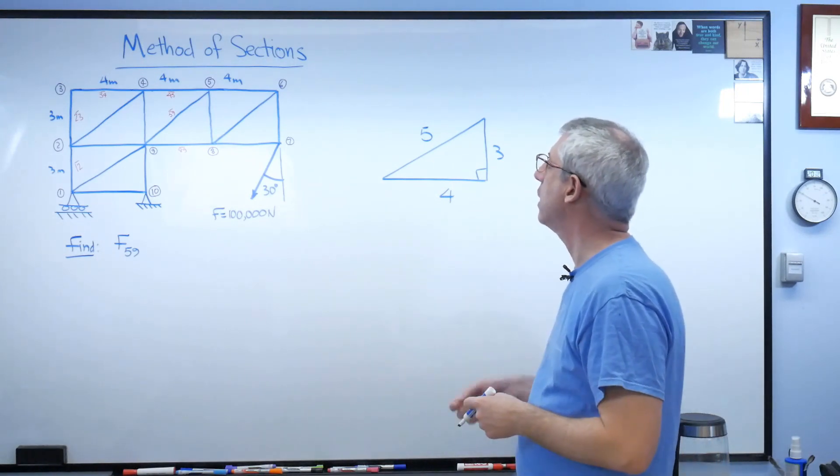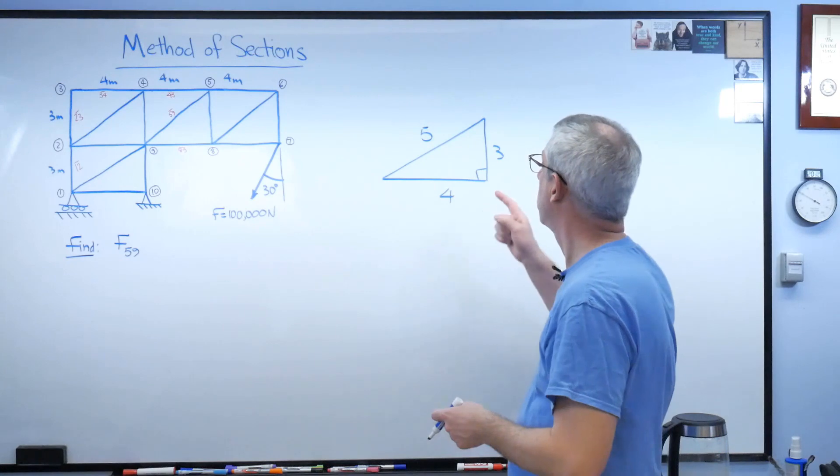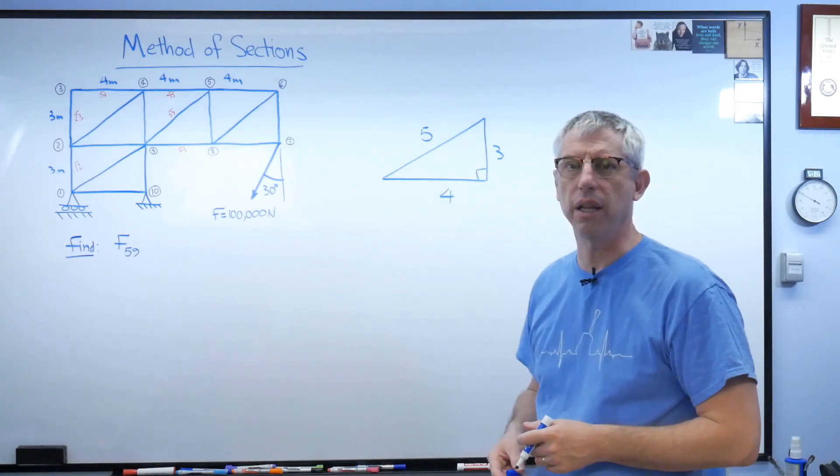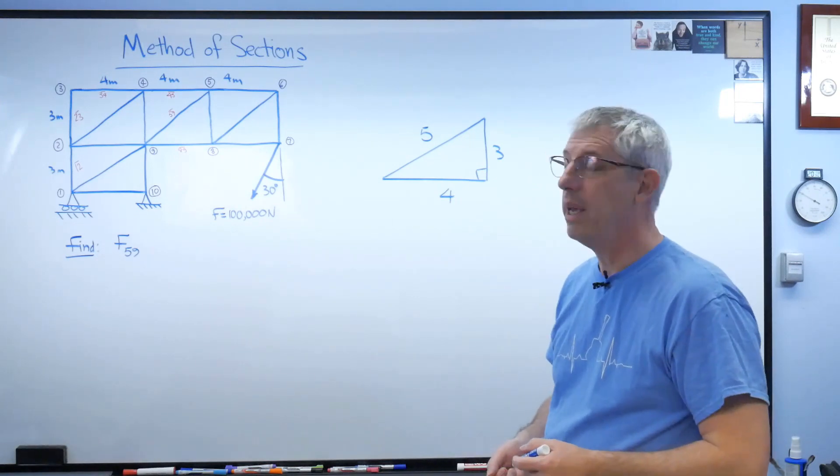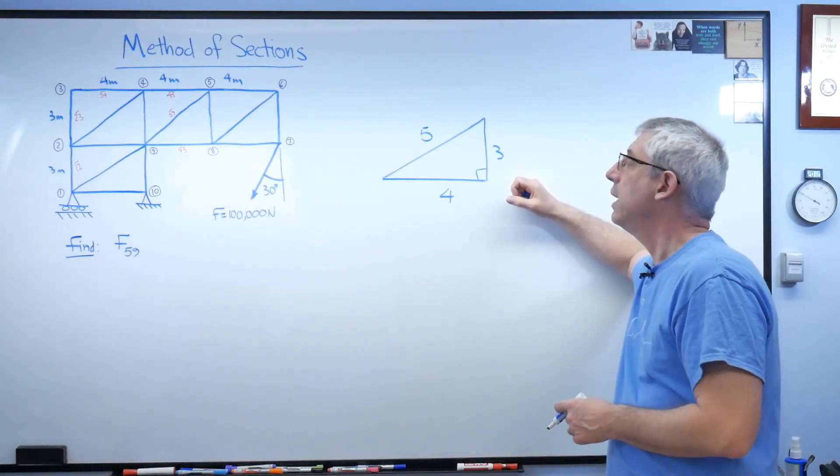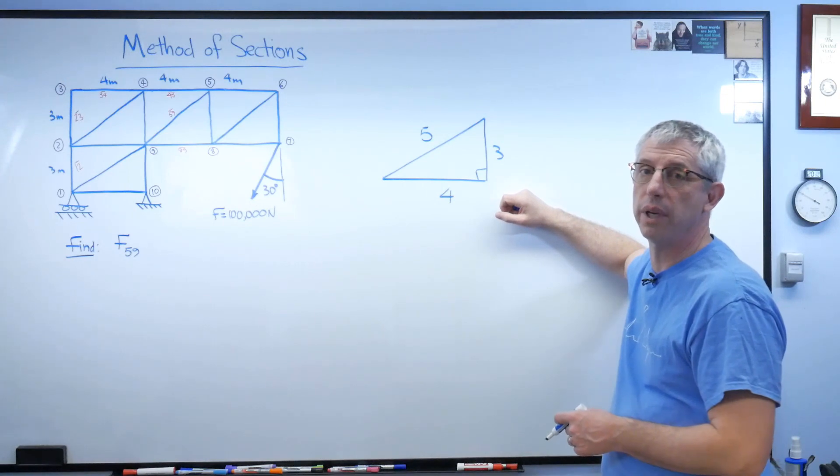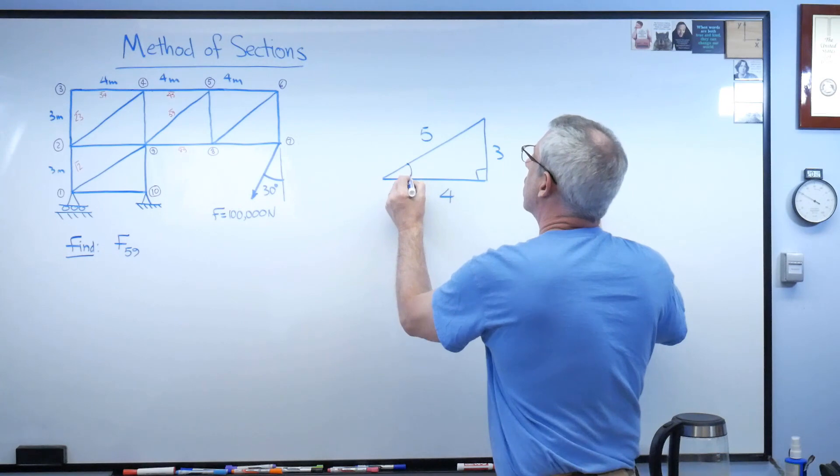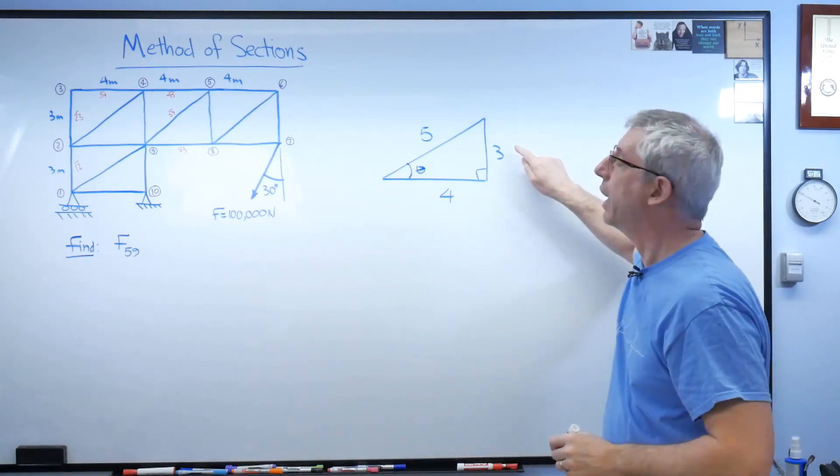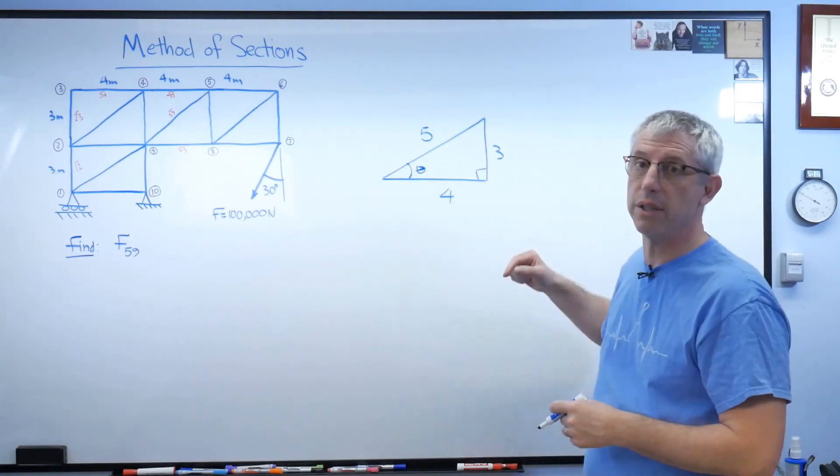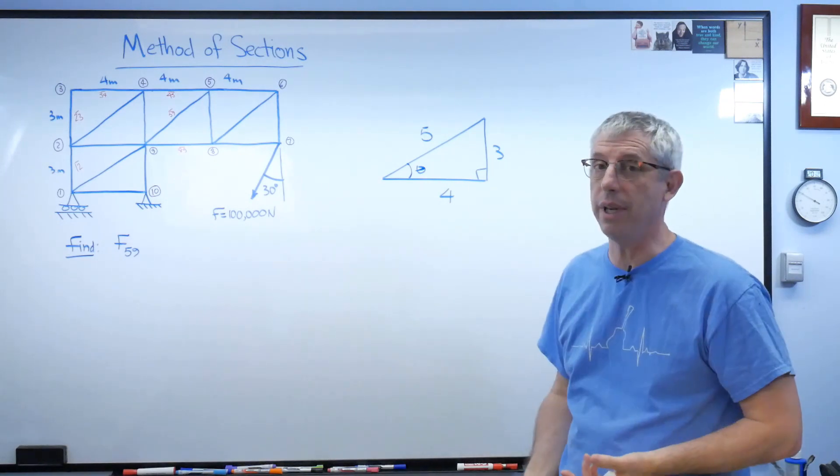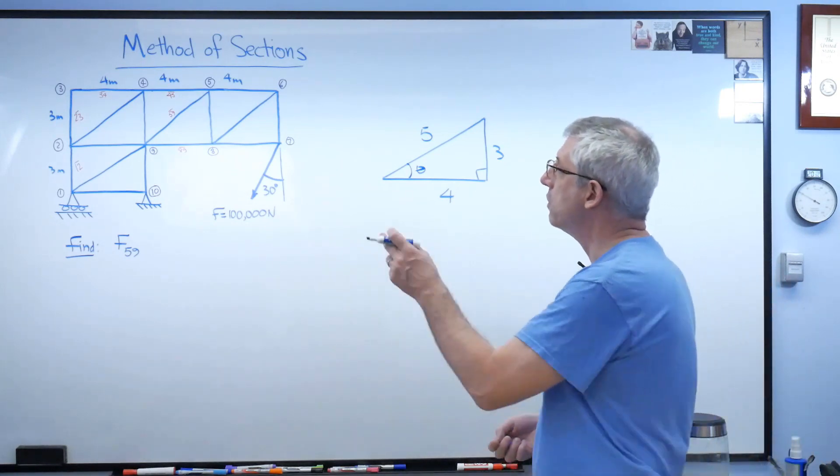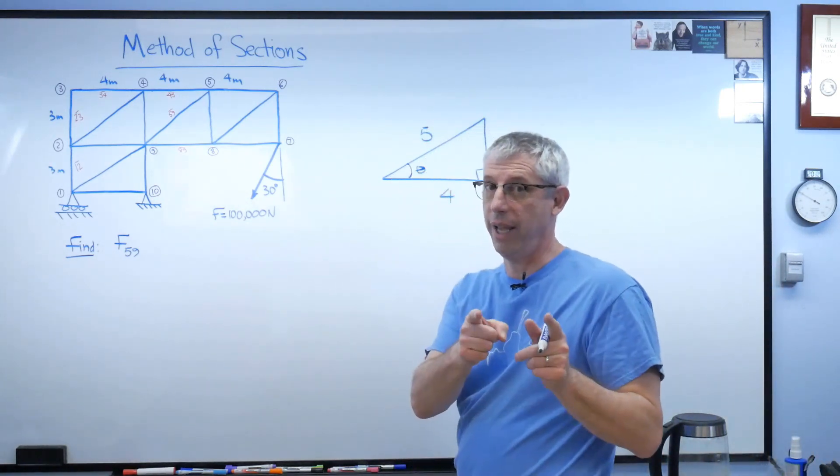Now, if this isn't something you've seen before, a three, four, five right triangle looks like this. There are a couple of triangles out there where, when you apply the Pythagorean Theorem, you get whole numbers. The thing that makes this nice is that when it's time to find sines and cosines and tangents, you don't have to use your calculator. Sine is three over five. Cosine is four over five. And tangent is three over four. You never even really need to know what theta is.